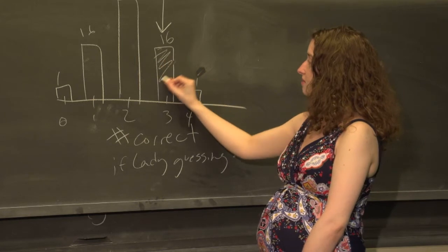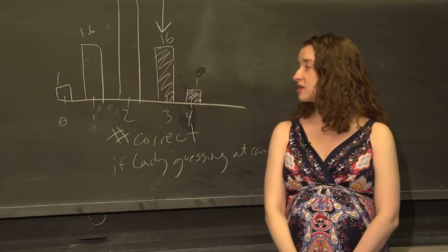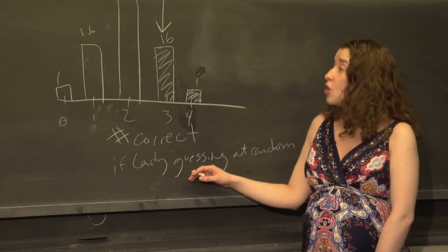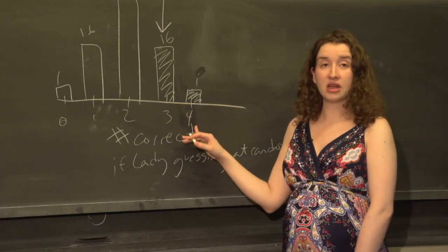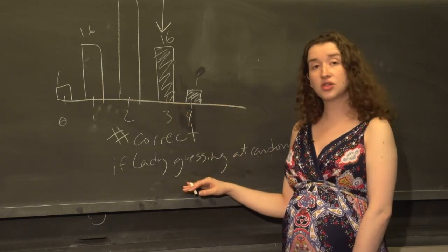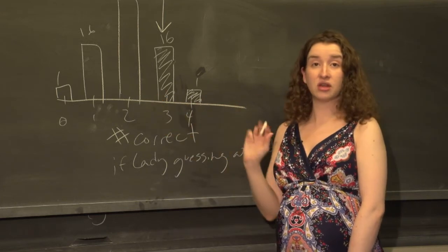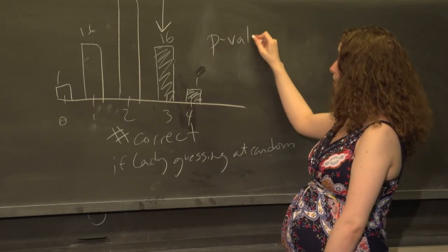I'm going to shade in this bar. I'm going to shade in this one as well because the way we're going to phrase the question is assuming that the lady was choosing cups at random, what's the probability that she would have gotten at least this many correct? Assuming she was choosing at random, what's the probability she would have been at least this good at the test?